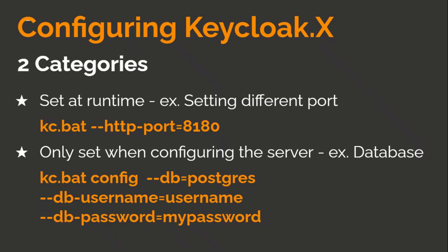For configuring KeycloakX there are two categories. The first is runtime configuration — for example, if you want to set a different port such as 8180, you use: kc.bat --http-port=8180. The second is server configuration — for example, setting the database using: kc.bat config --db=postgres --db-username=username --db-password=yourpassword. This simple configuration allows you to quickly integrate databases such as Oracle, MySQL, or PostgreSQL.